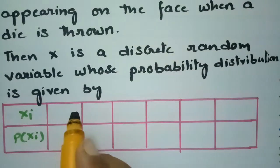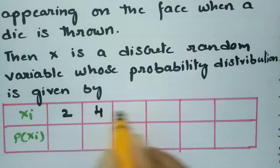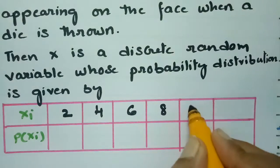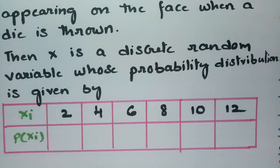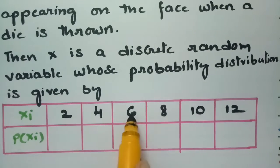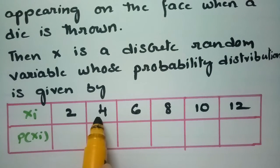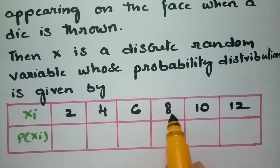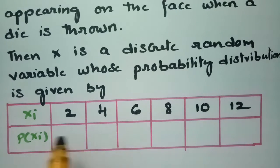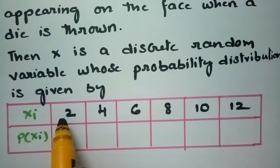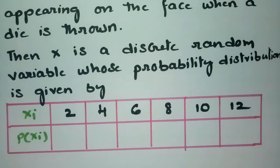Twice the number: if the die shows 1, then X is 2; if 2, then X is 4; if 3, then X is 6; if 4, then X is 8; if 5, then X is 10; and if 6, then X is 12. So we double each of the numbers 1 through 6 appearing on the die.